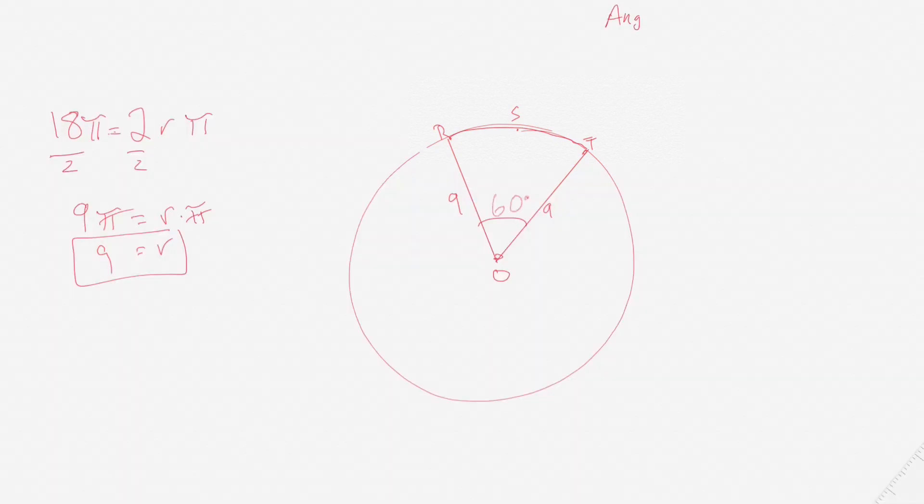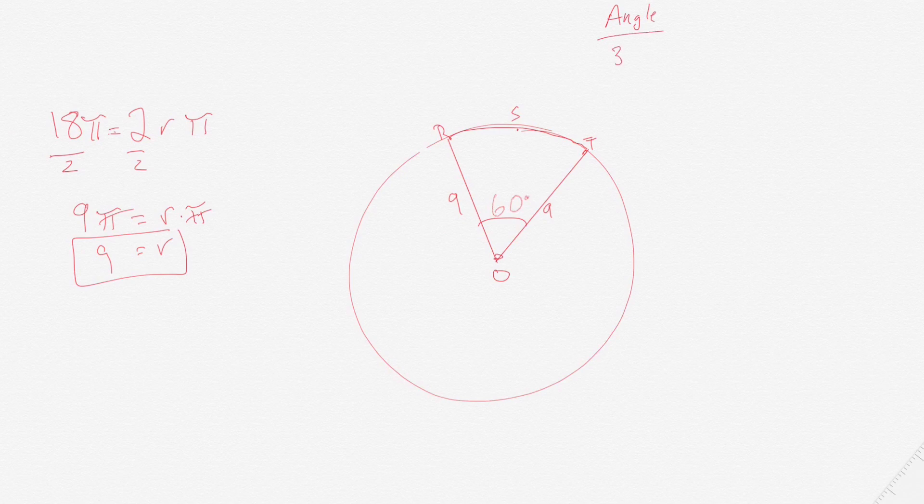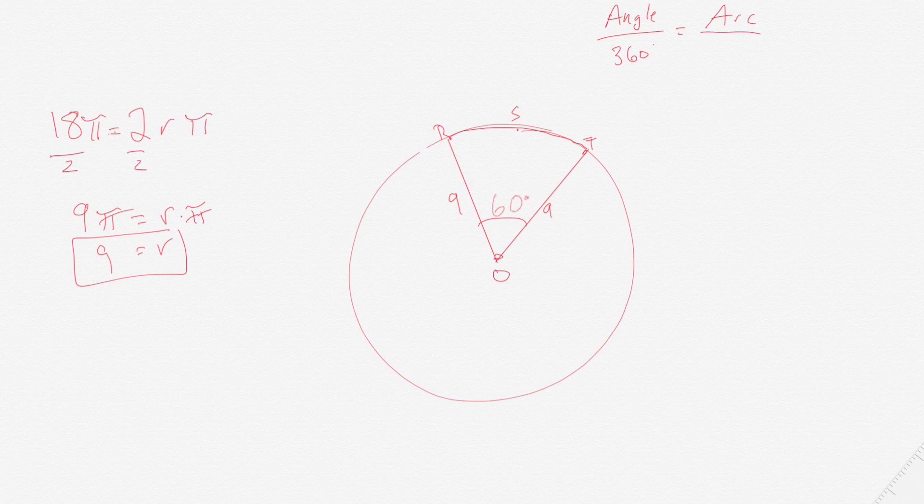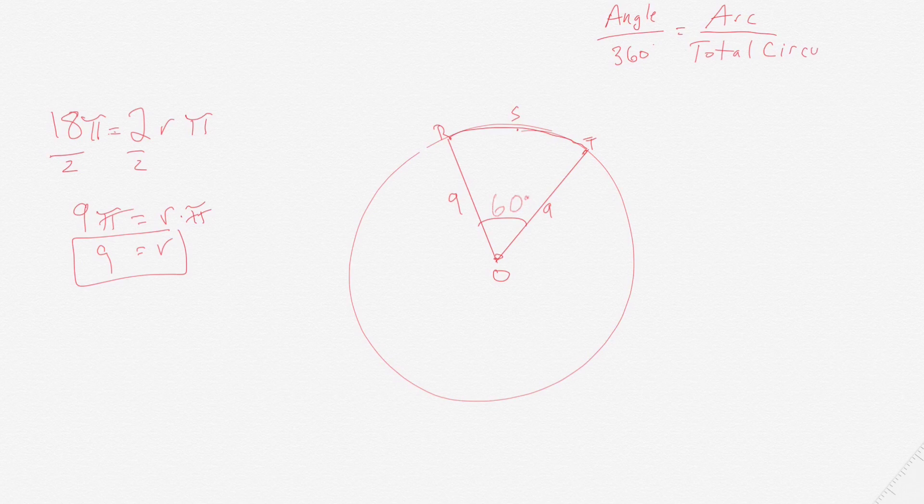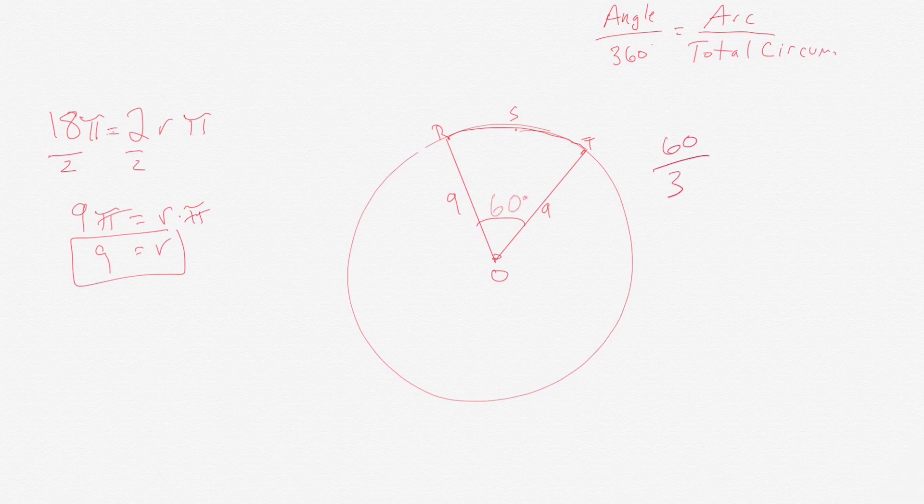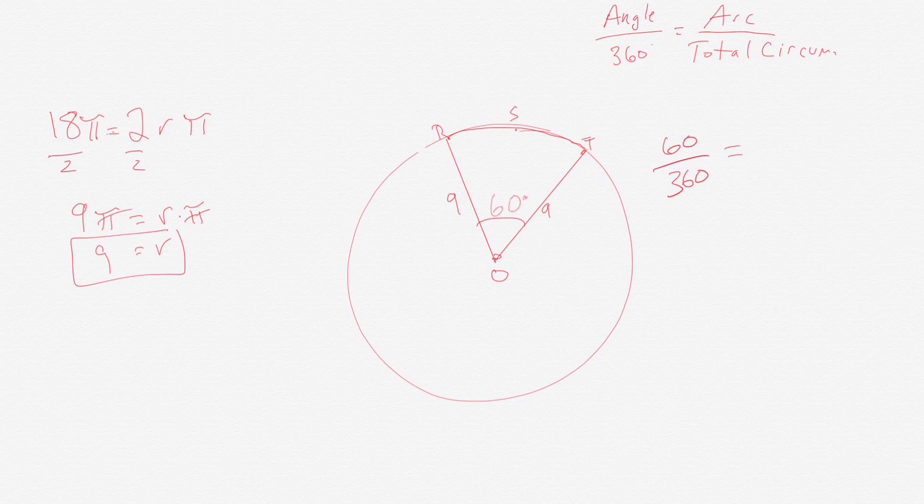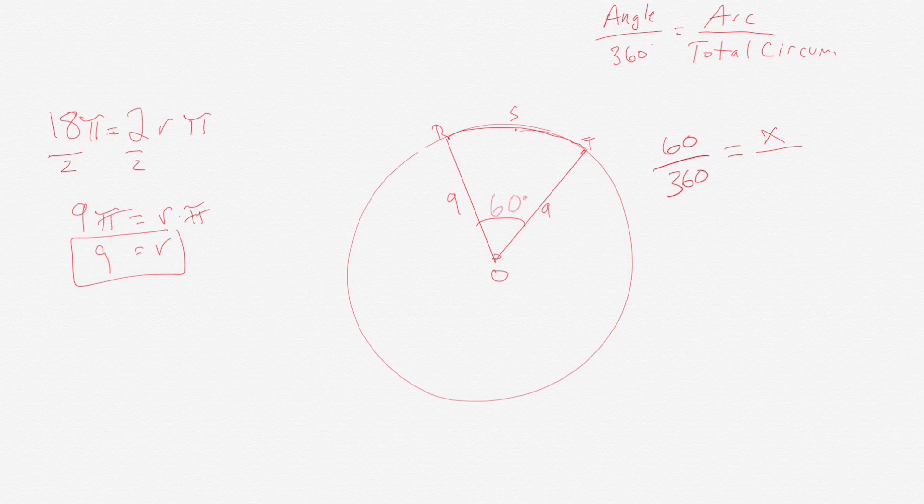There's a formula, and that formula is the angle of a sector divided by 360 is proportionate to the perimeter of the arc over the total circumference. The angle is 60 degrees, so we go 60 over 360, because 60 is the angle of the sector, and we set that equal to the arc, which we don't know, so we'll call it x, over the total circumference which is 18π. So we have that ratio of 60/360 equals x/18π.